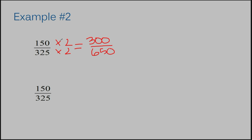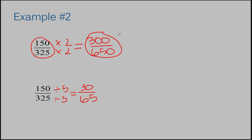We could also do things other than multiplying. Remember, you only have to do the same thing to your numerator and denominator, but that same thing does not have to be multiplication. Let's try division — we can divide by five on the numerator and the denominator. One hundred fifty divided by five is thirty. Three hundred twenty-five divided by five is sixty-five. So one hundred fifty over three hundred twenty-five, three hundred over six hundred fifty, and thirty over sixty-five — all of these numbers are equivalent. They just look different.